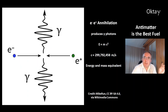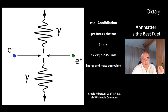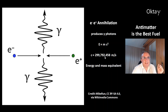This is a picture of the electron-positron annihilation, which produces gamma photons. This equation E equals mc² gives you an idea about the energy that you can produce. C is about 300,000 km per second — that's the speed of light — so c² is a very big number.